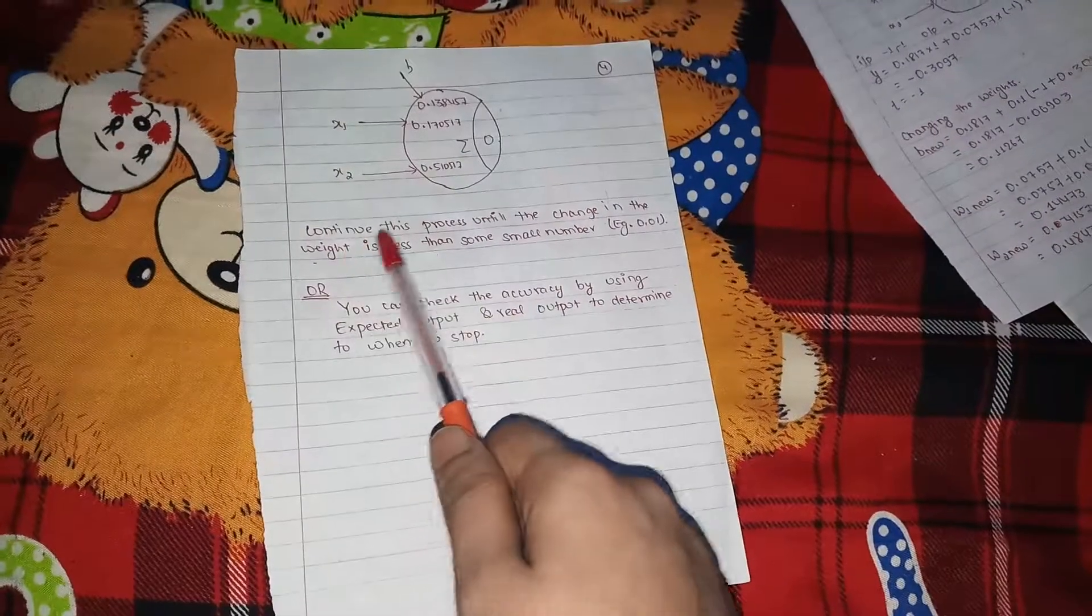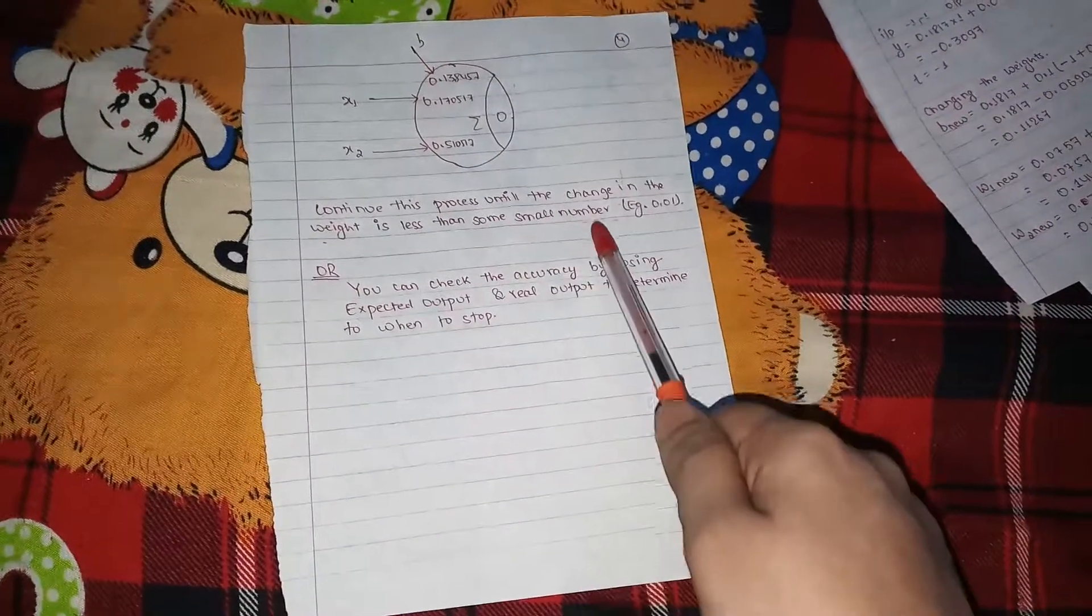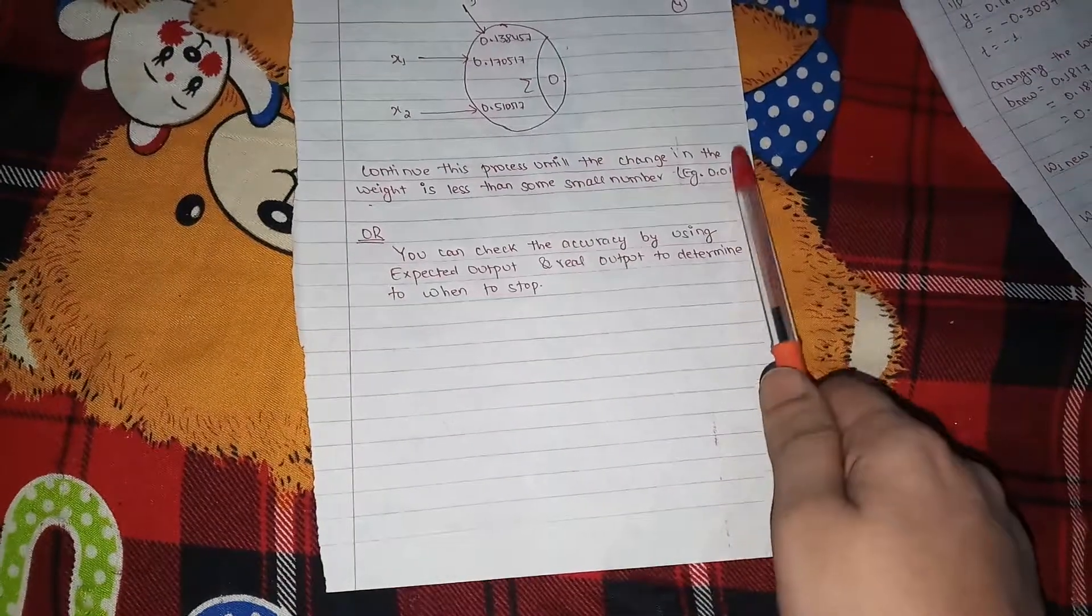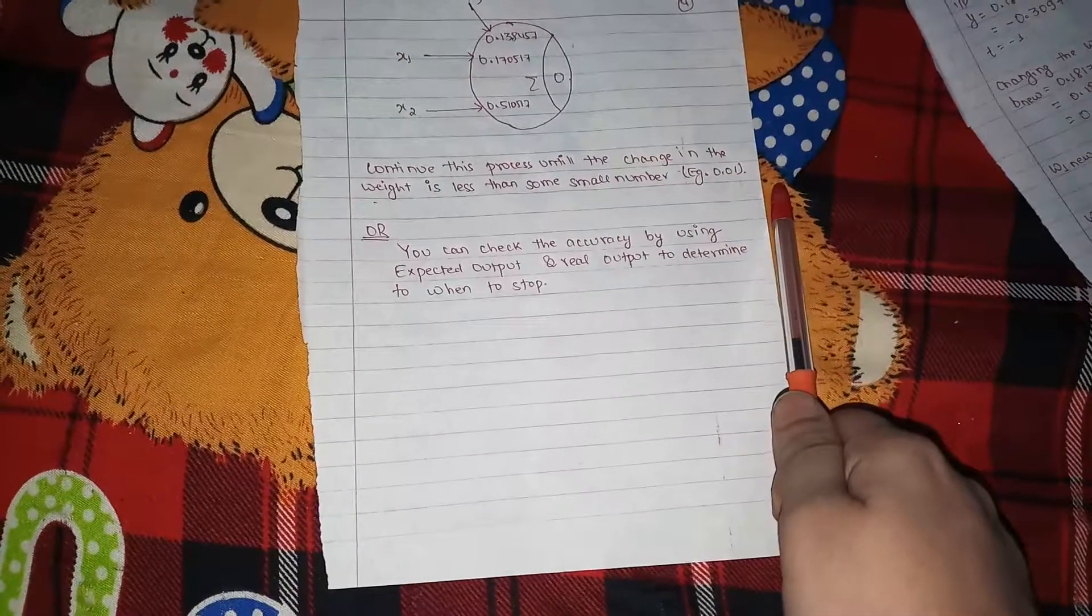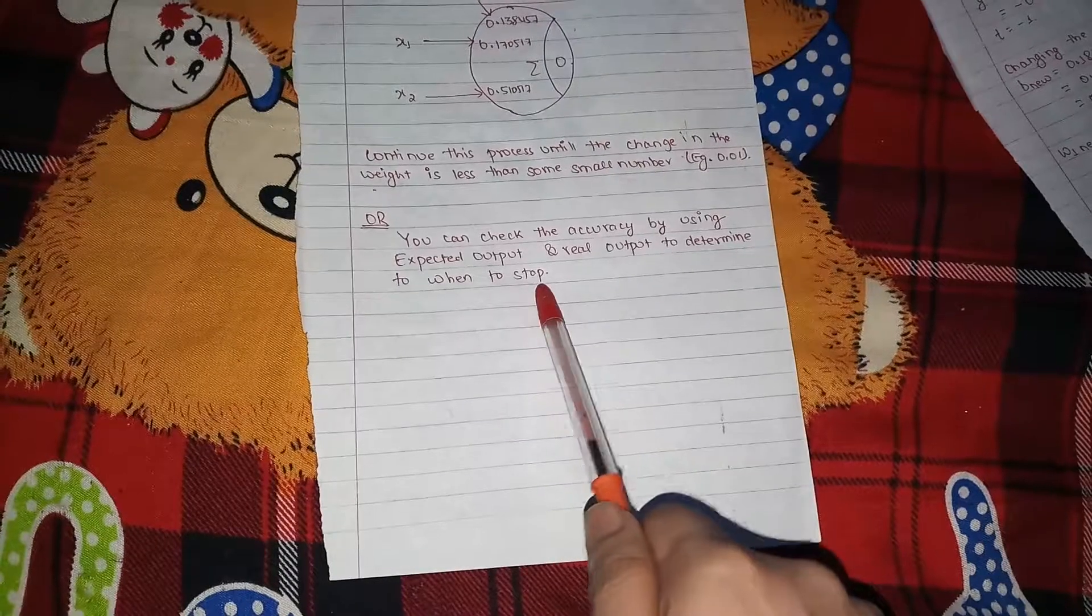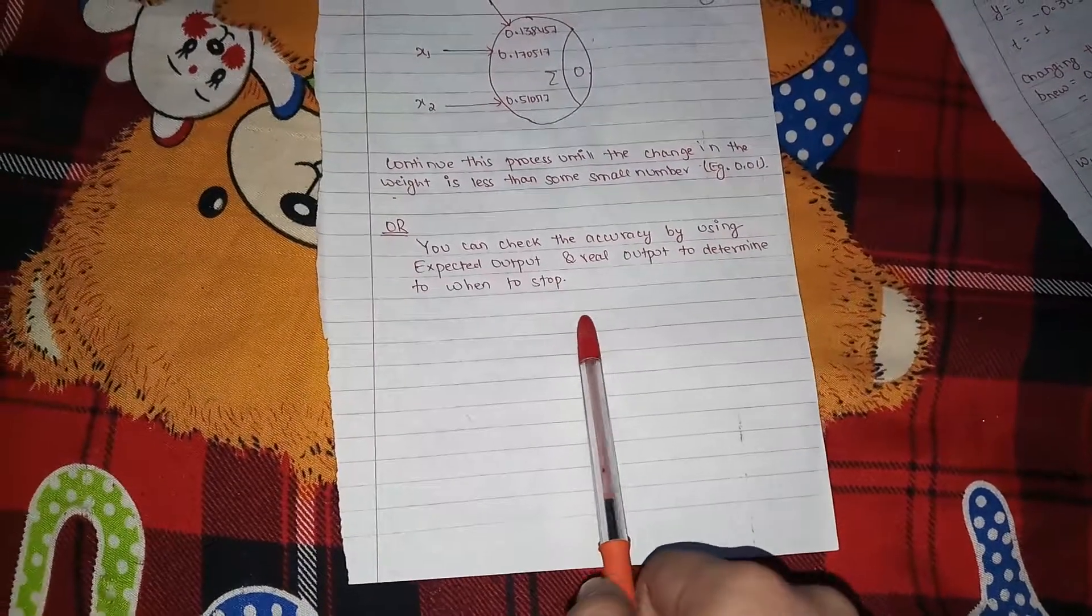So we will continue this process until the change in the weight is less than some small number. Let us suppose the change in the weight is 0.01, then if the change in the weight is less than 0.01, then we stop, or you can check the accuracy by using the expected output and the real output to determine when to stop.